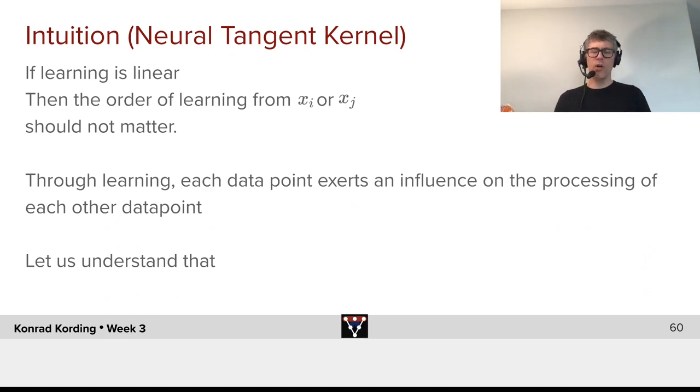I could first learn from data point xi and then from data point xj or the other way around. The order doesn't matter because we will be making very small changes. Now, in a way we can understand this learning as influences between having learned xi on how we will process xj and vice versa.